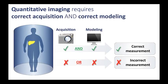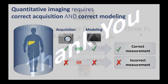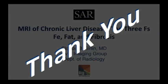Remember, although I didn't have time to discuss it in detail today, that when you use these quantitative imaging methods to look at iron, fat, or fibrosis, it's very important that you use a technique in which the acquisition was done correctly and the modeling was done correctly. Both the acquisition and the modeling have to be correct in order for the measurements to be correct. With that, I'd like to thank you very much for your attention.